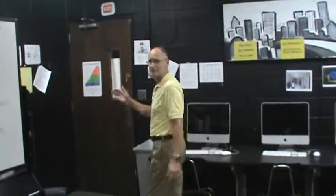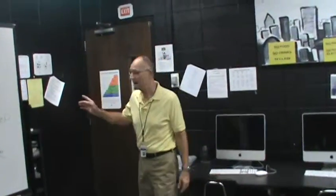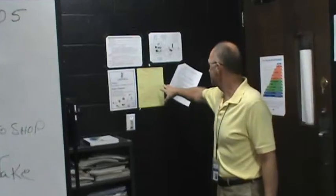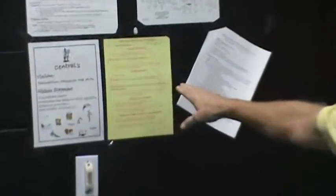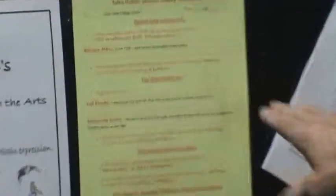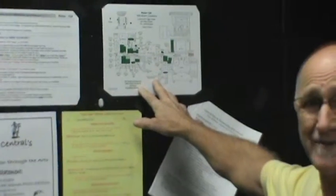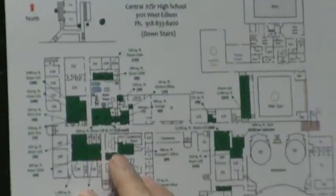Over here, we keep our public school safety procedures for fire drills — we know where to go, our location, our meeting point, and what we do when we get there. This is also our schematic of the school showing our safe area in case of inclement weather or tornadoes. We have interior safe rooms that we go to depending on the location of your room.